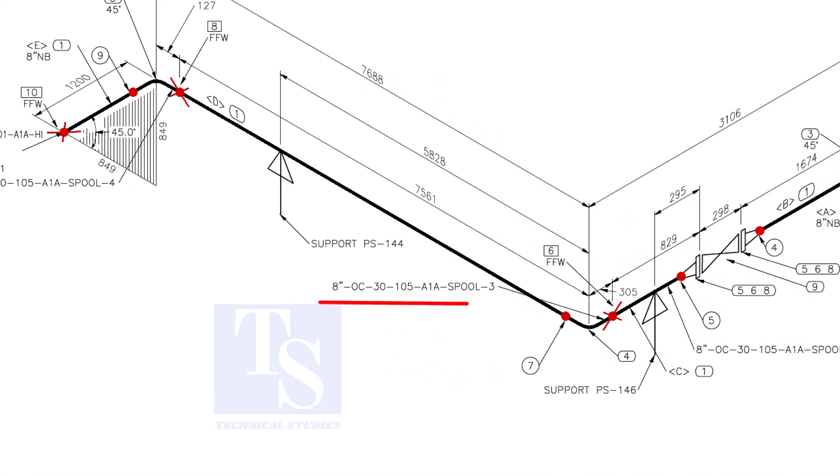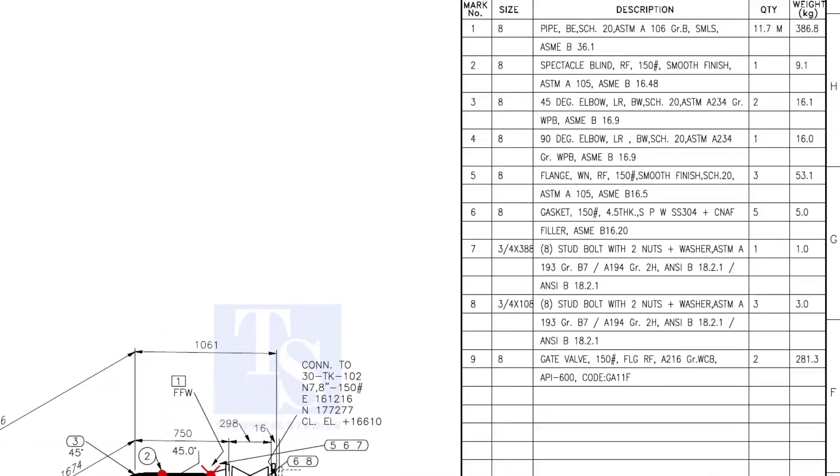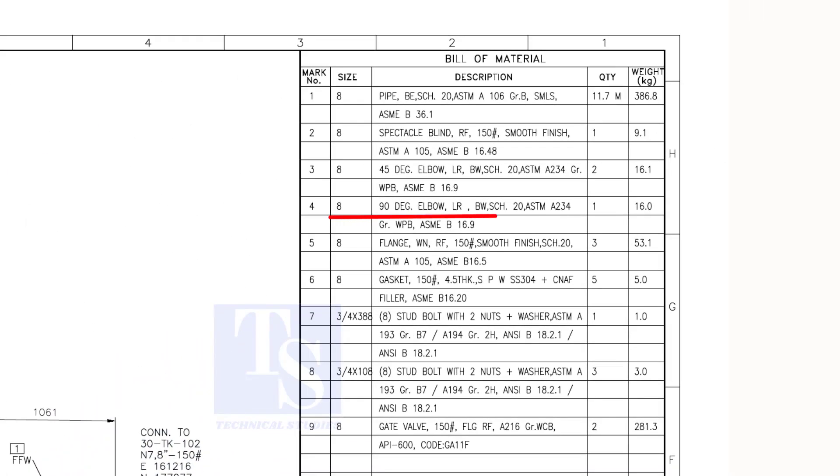Check the details of spool number 3. We know item number 1 is pipe. Check what is item number 4 in the material list. As per the list, item number 4 is a 90-degree long radius elbow. Let us fabricate this spool.